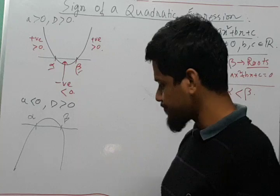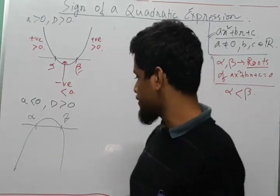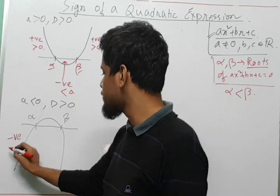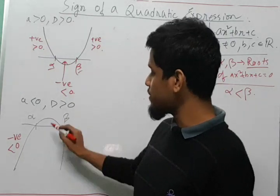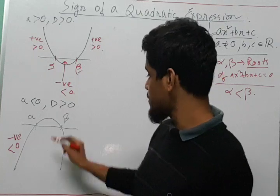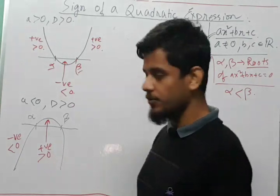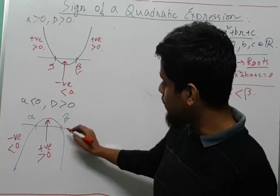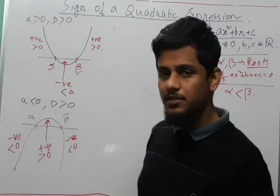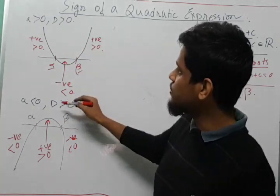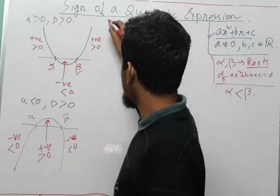As you can see, if x is to the left of alpha, the quadratic expression is negative — less than 0. If x lies between alpha and beta, you can see the quadratic expression is positive since it lies above the x-axis, so the expression is greater than 0. Now if x is to the right of beta, as you can see, the quadratic expression is again negative — less than 0. So this is the condition for D greater than 0, and depending on whether a is greater than or less than 0, the sign changes accordingly.